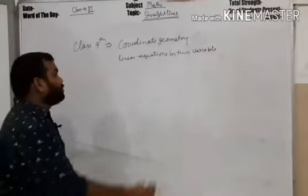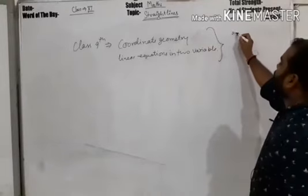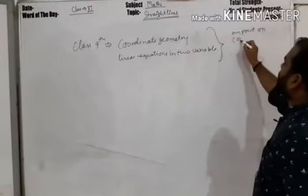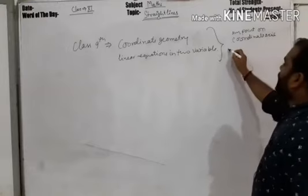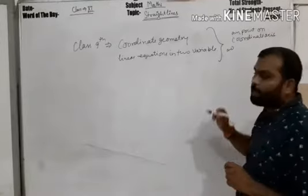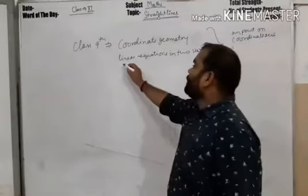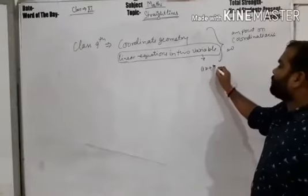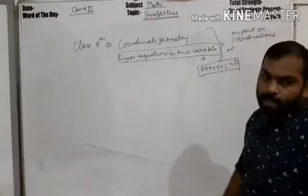In Class 9, we learned how we can represent any point on the coordinate axis, and using these points — joining these points — we can draw different figures on the coordinate axis. And in linear equations in two variables, we had an equation of the type px plus by plus c is equal to zero, which represents a straight line.